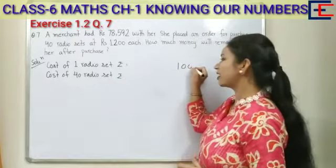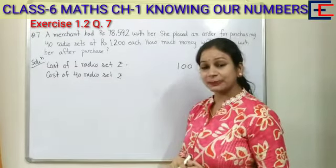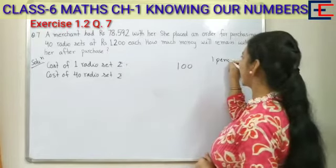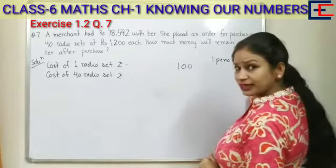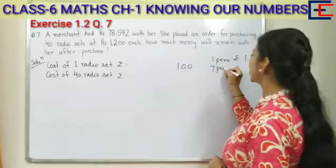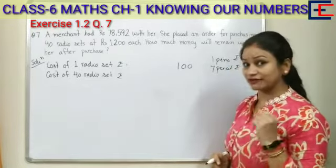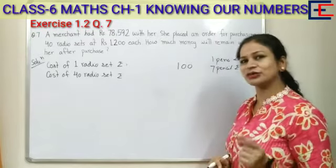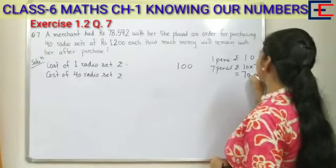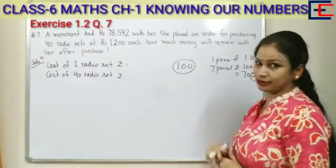To understand this, let's take a simple example. Suppose you have 100 rupees and one pencil costs 10 rupees — how many pencils do you need to buy? Seven. So what is the cost of seven pencils? We multiply: 10 multiplied by 7 equals 70 rupees. And you had a total of 100 rupees.